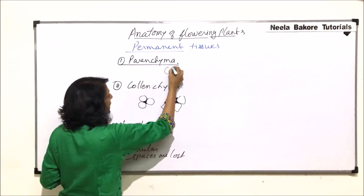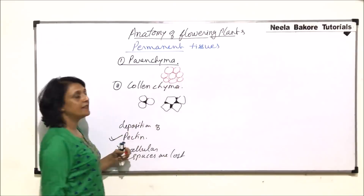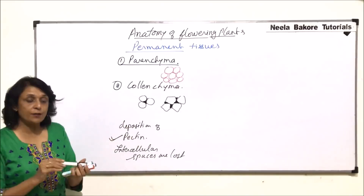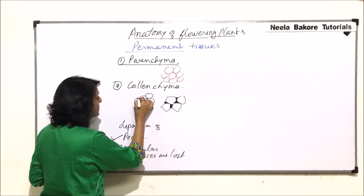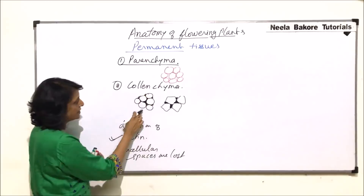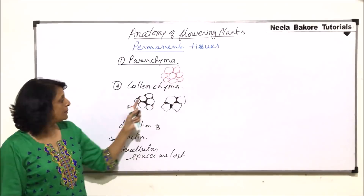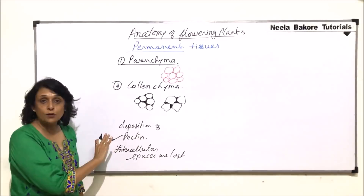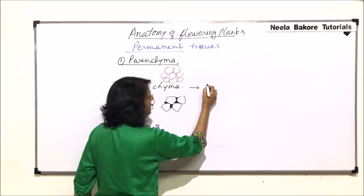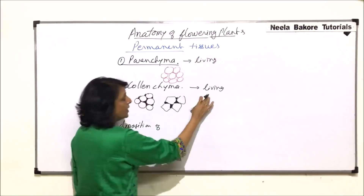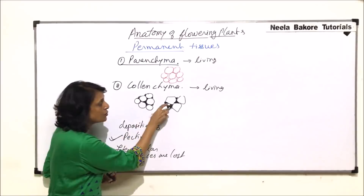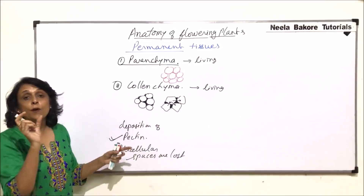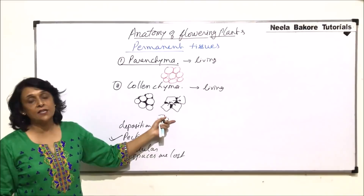Comparing with parenchyma, which had loosely arranged cells with visible intercellular spaces — in collenchyma, if the intercellular spaces are filled up because of some substance, that is collenchyma. But in spite of this deposition, collenchyma still remains living cells. The deposition is only at the corners, and exchange of substances can take place through the shared wall, so these cells are living cells.